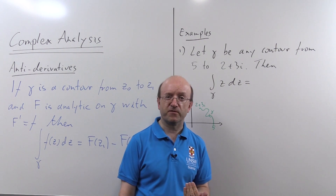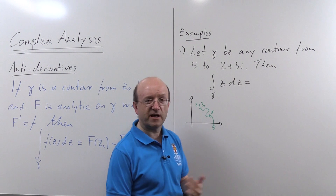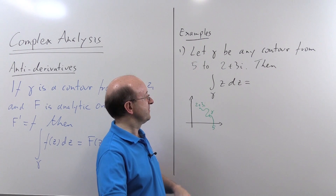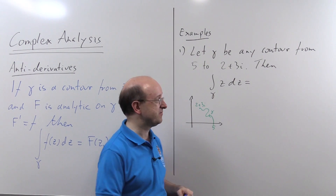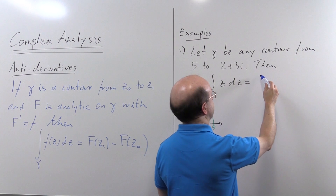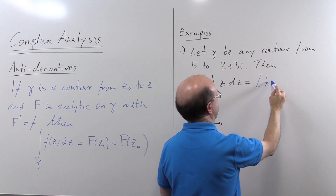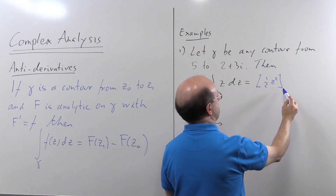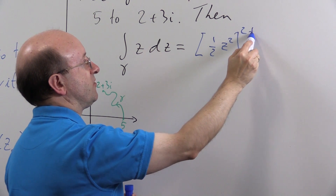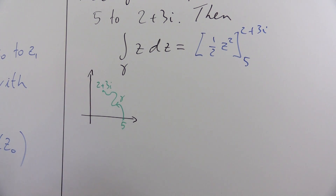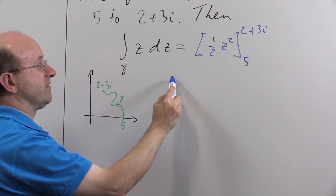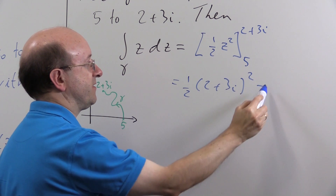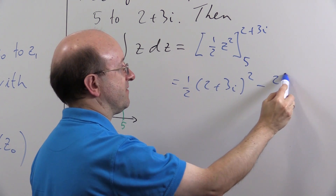The antiderivative is very obvious. You want a function whose derivative is z, and that's just one half z squared. So if you want to integrate this function along any contour you like, the shape doesn't matter — just the endpoints. This is the value of the antiderivative, one half z squared, evaluated between 5 and 2+3i. That's one half of (2+3i) squared, minus one half of 5 squared, which is 25 over 2.